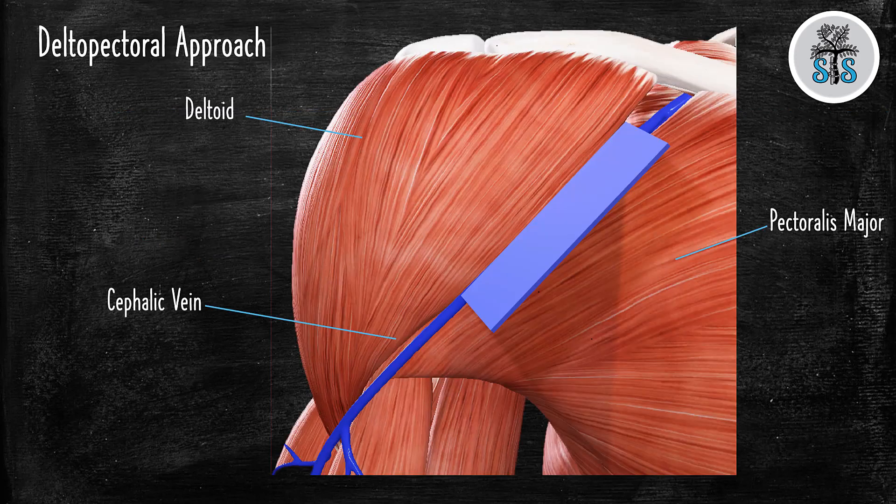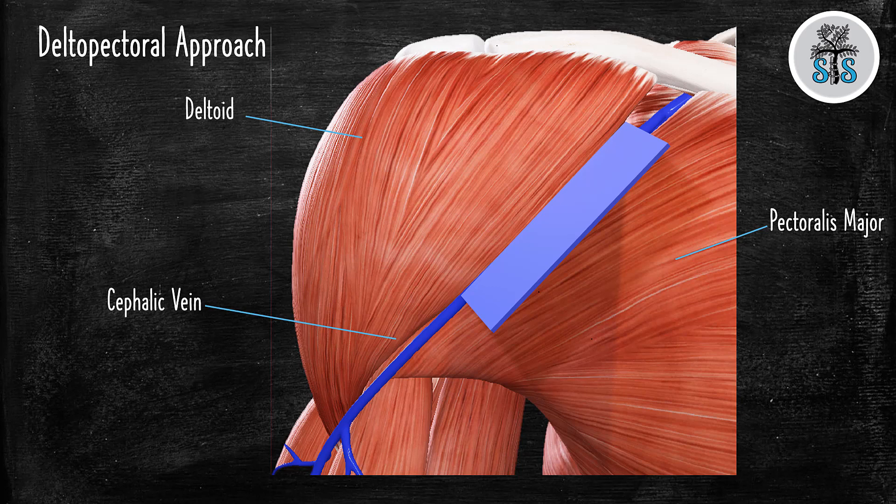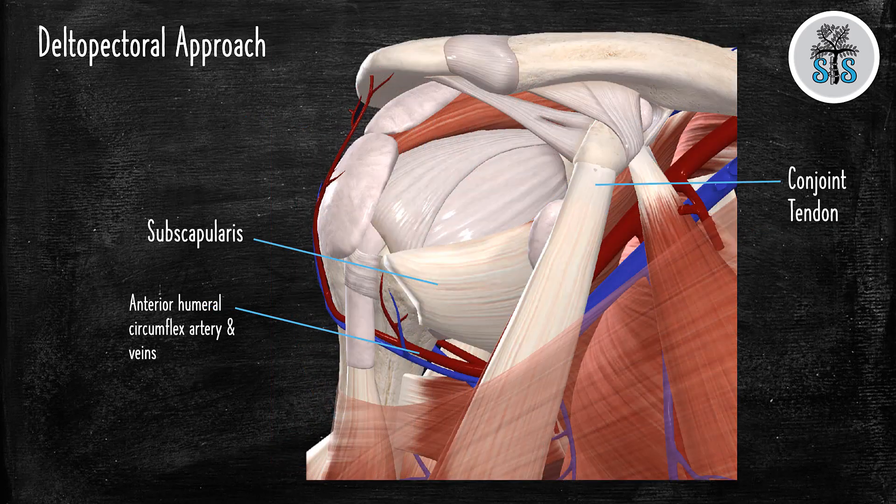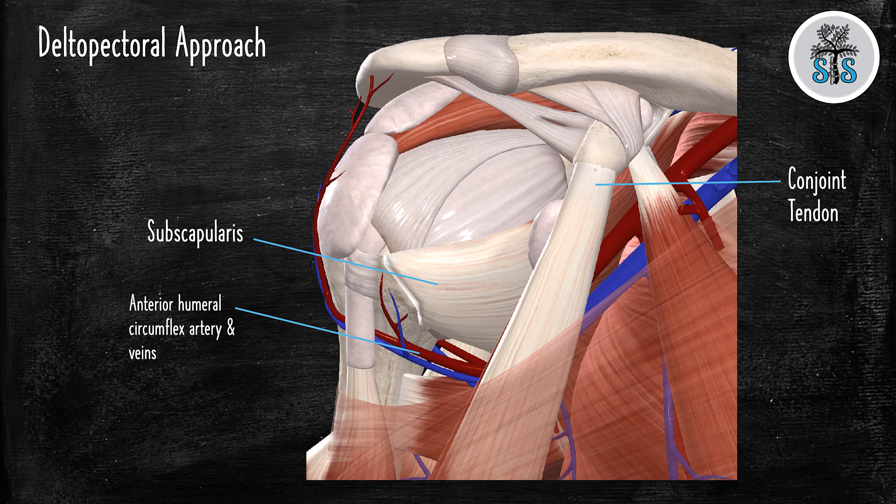So the delto-pectoral approach. Your typical skin incision is going to start from the coracoid and go distally about 10 to 15 centimeters. Once you make your skin incision, the first major structure you have to be aware of is the cephalic vein, which will usually be found running within the delto-pec interval. The cephalic vein can then be retracted either laterally or medially. Once the interval is found, you go through and you will see your conjoint tendon medially. The musculocutaneous nerve will enter the biceps about five to eight centimeters distal from the coracoid. So when retractors are placed around the conjoint tendon, care must be taken to avoid entering the nerve. Now, do you remember what the conjoint tendon is composed of? It's the short head of the biceps and the coracobrachialis. That question definitely will be asked at some point.